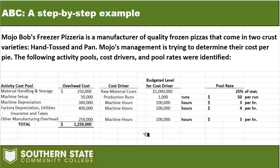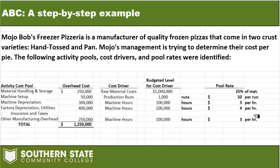Here's the data we need. We're going to keep all the same overhead categories, but instead of one lump sum like in normal costing, we'll divvy them out into different activity centers. The driver for material handling and storage is going to be raw material cost — our budget level for that is one million dollars. The cost driver for machine setup will be production runs, with a budget of a thousand runs. For depreciation, utilities, and other manufacturing overhead, we'll use machine hours with a budget level of a hundred thousand hours.